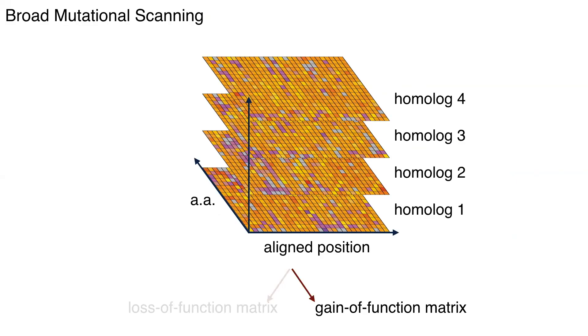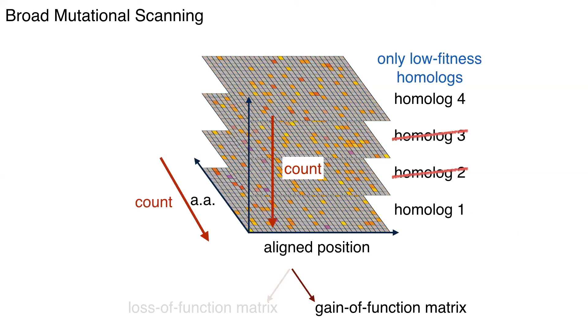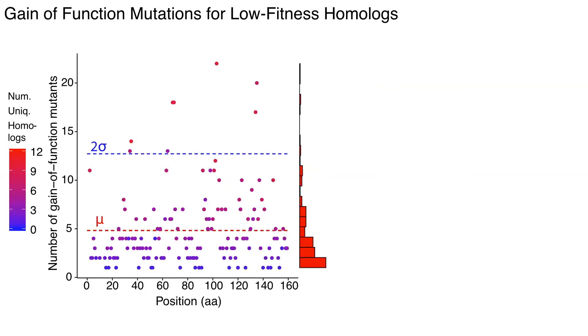And so I think an even more interesting in my limited time now is looking at the gain of function matrix. So what we did there was we took the homologs which are not able to complement at all, and we asked, can we find any mutants for them which actually restore function? And if you collapse it along the two dimensions, indeed we did.